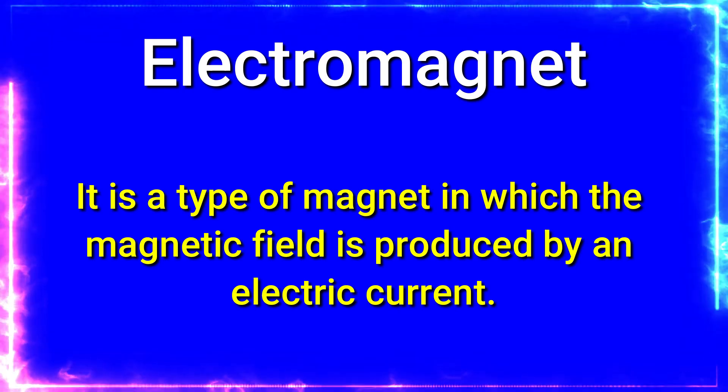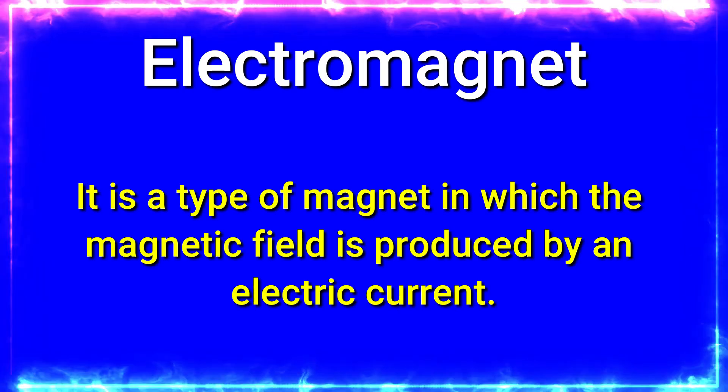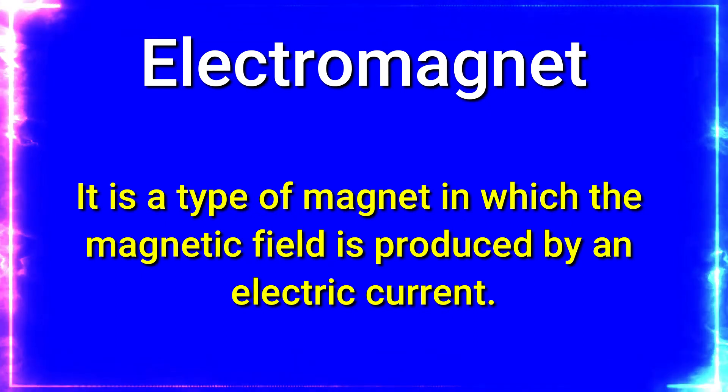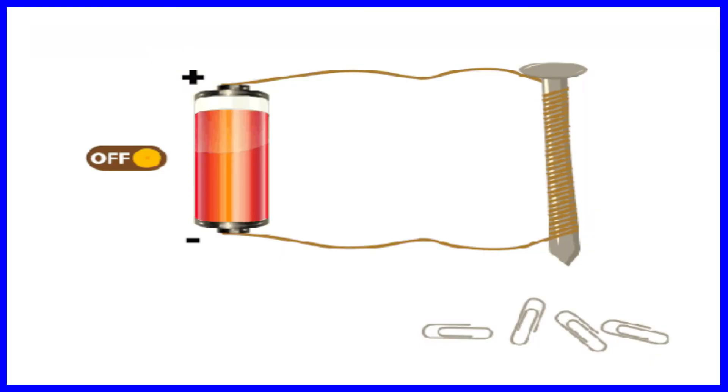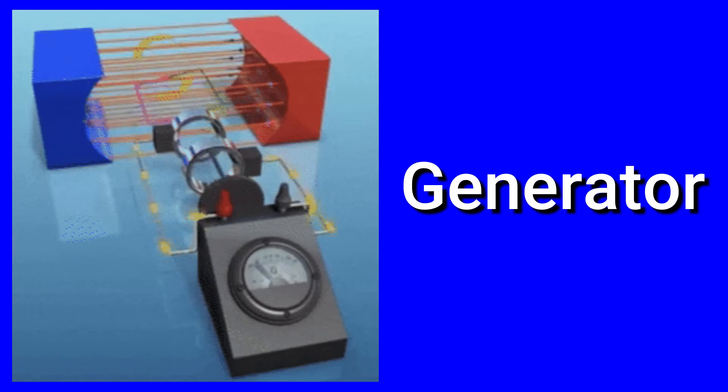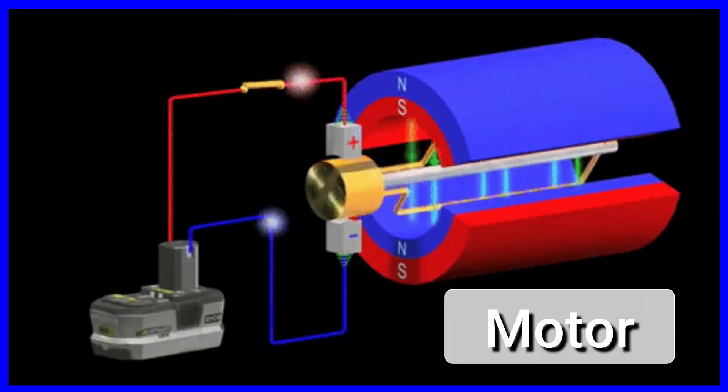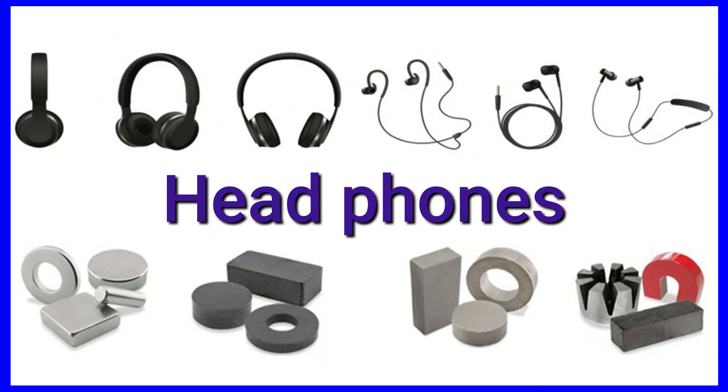Electromagnet is a type of magnet in which the magnetic field is produced by an electric current. We can see electromagnets used in generators, motors, headphones, etc., and many more.